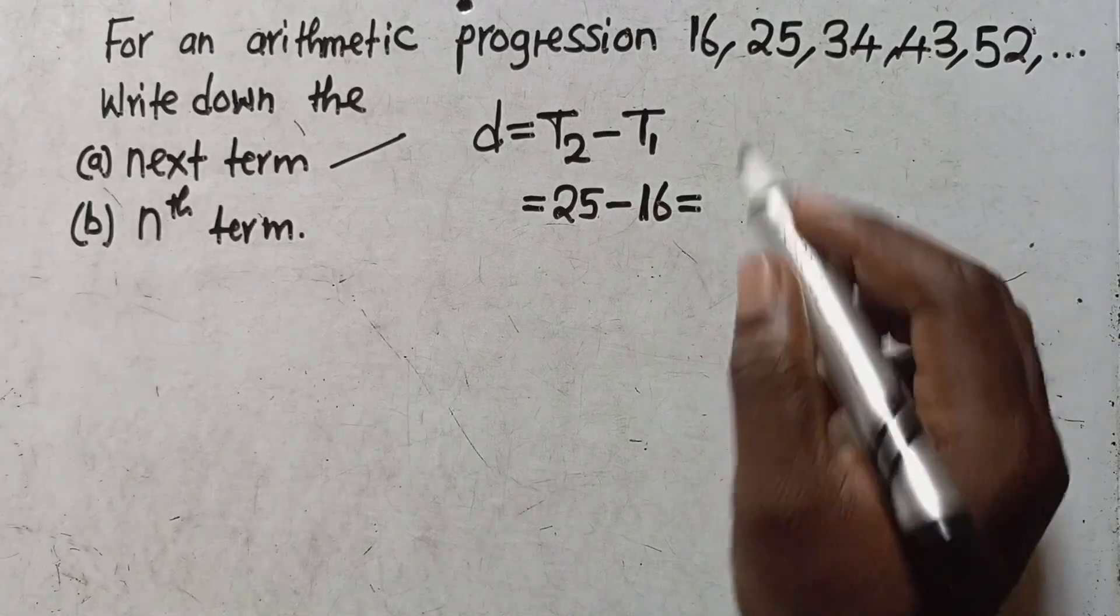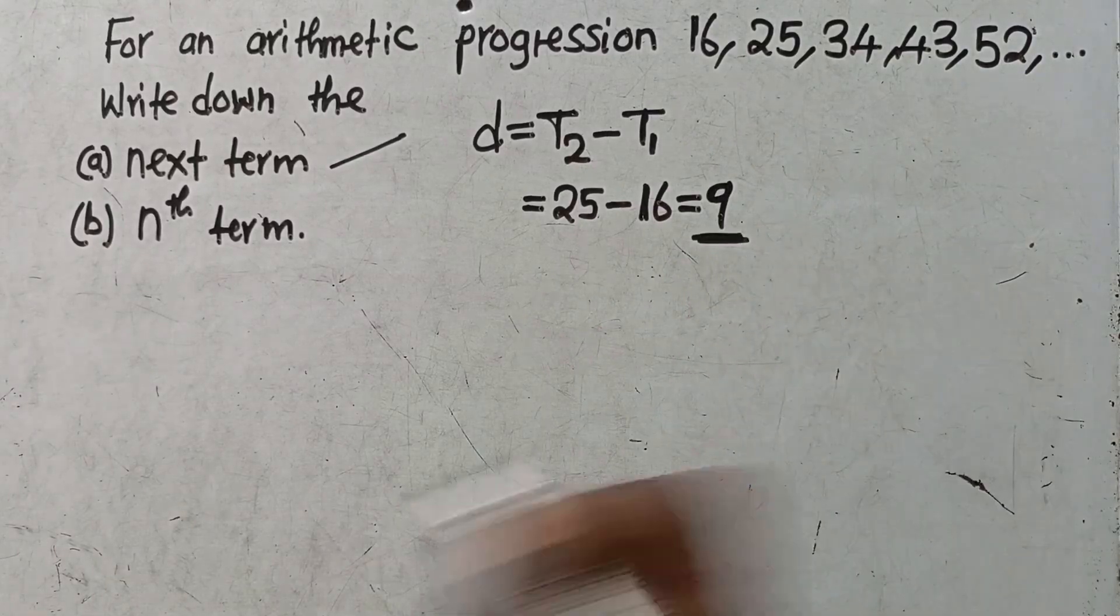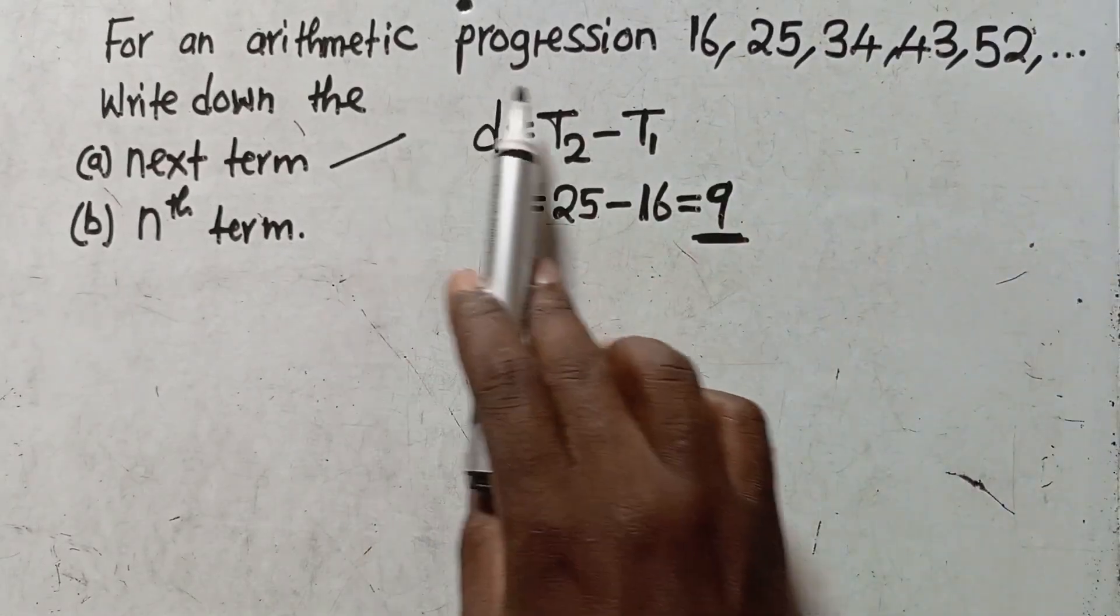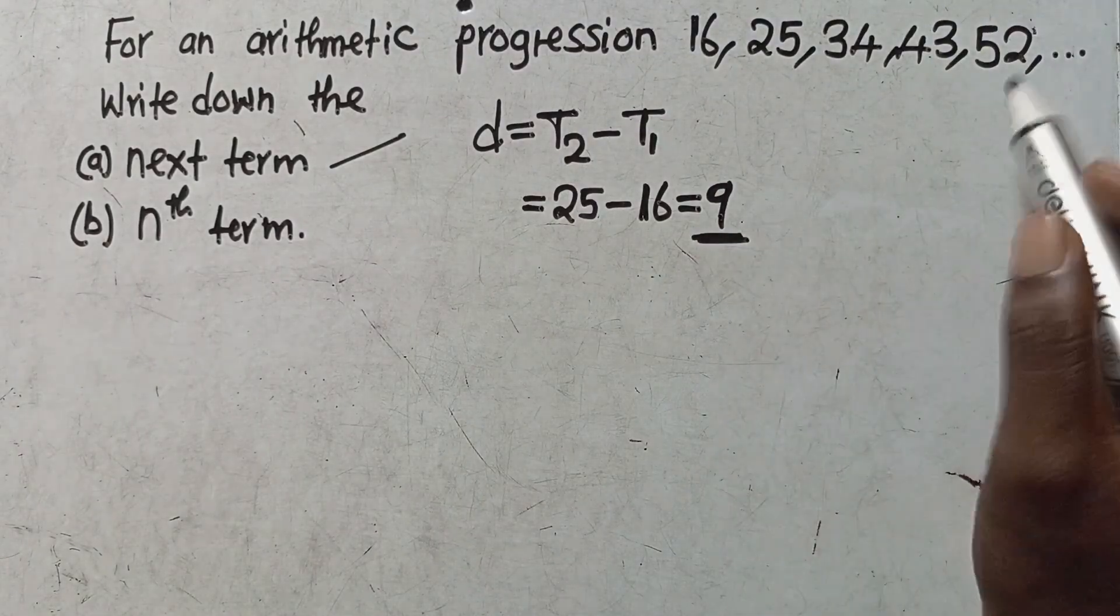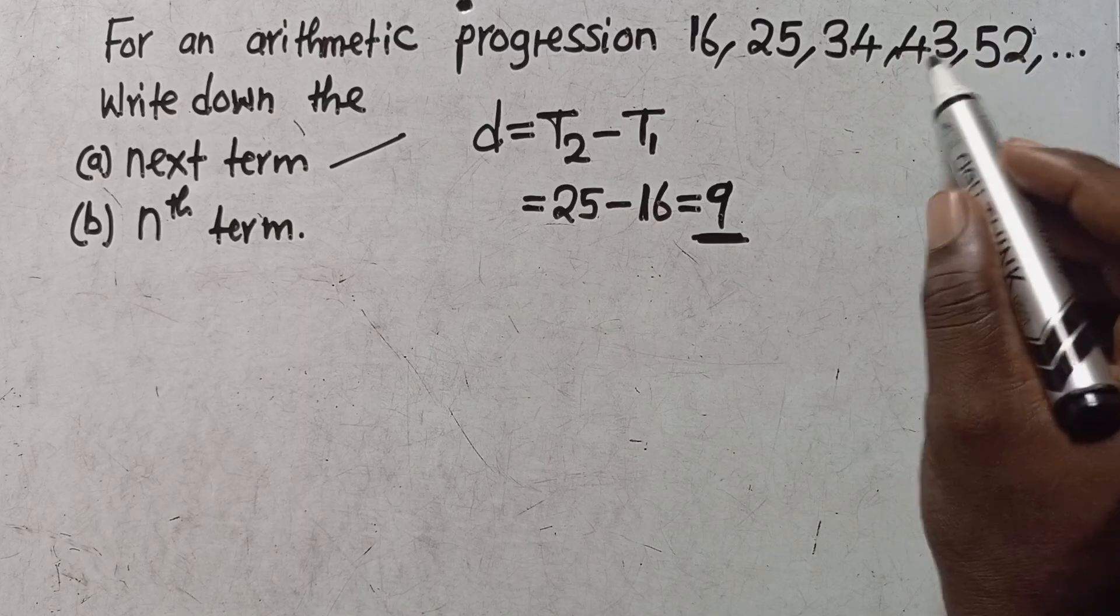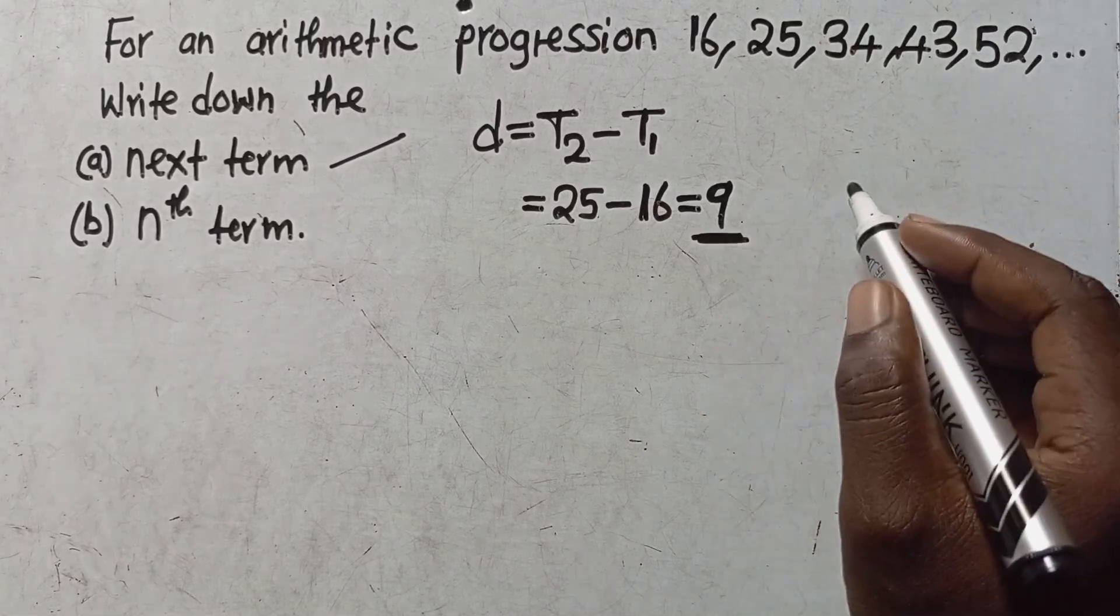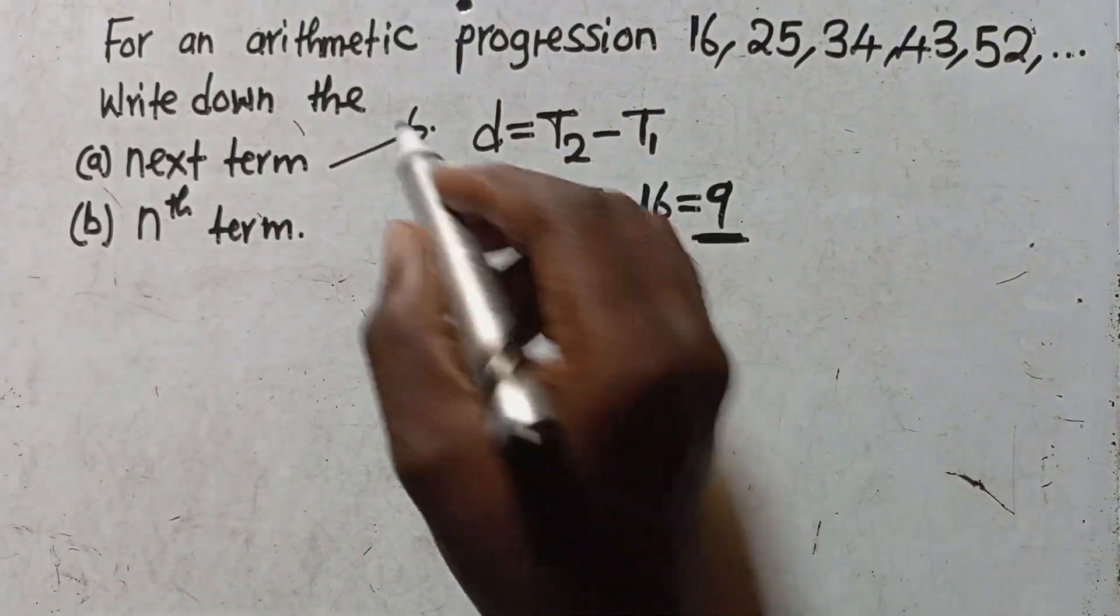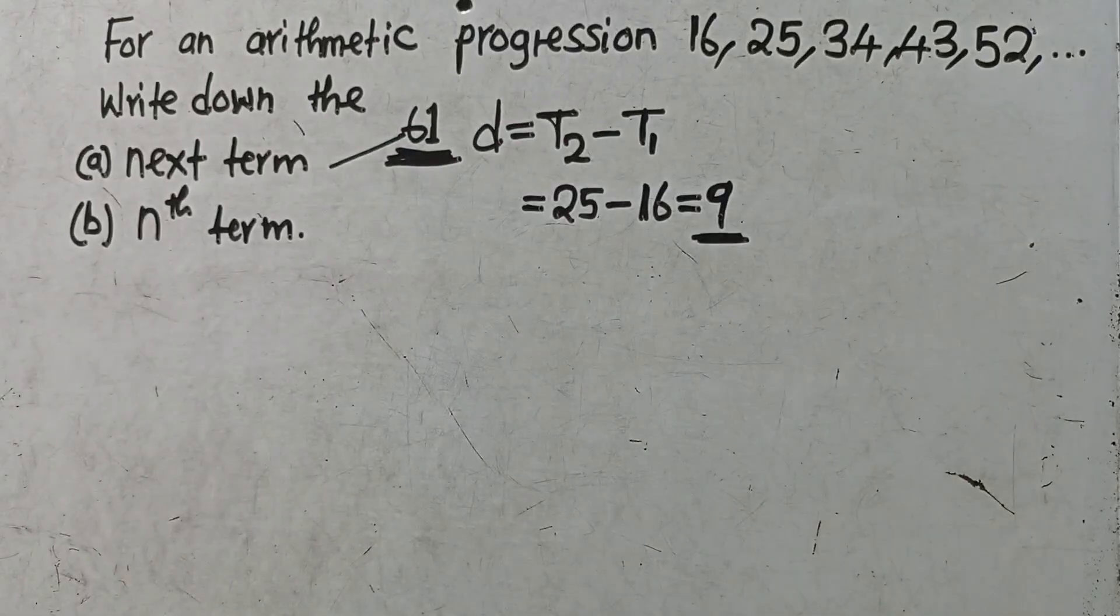So 9 is your answer. In an arithmetic progression, to find the next term you just need to add the common difference to the previous term. If we say 43 plus 9, we get 52. 52 plus 9, you are going to get 61. So 61 is our next term.